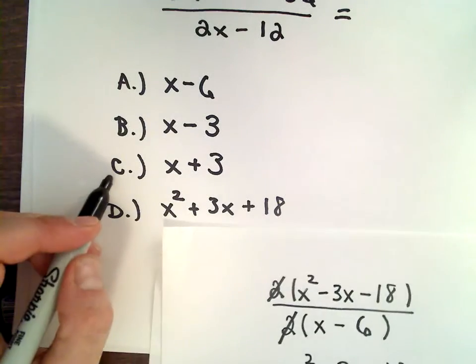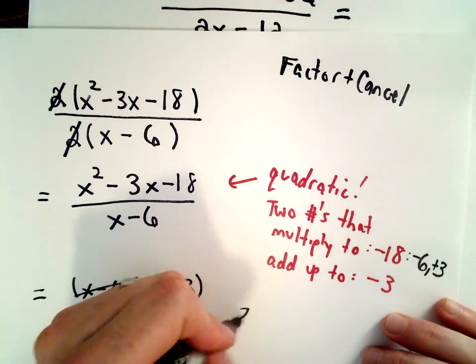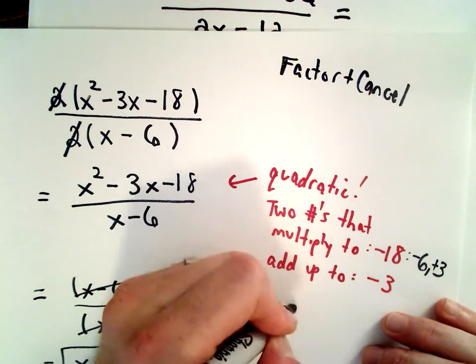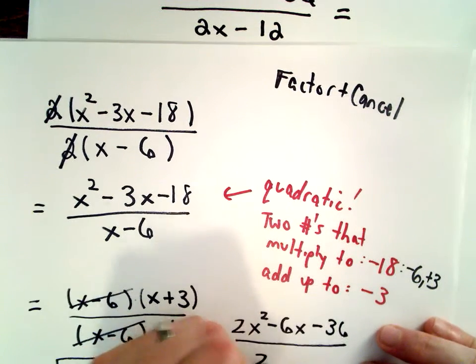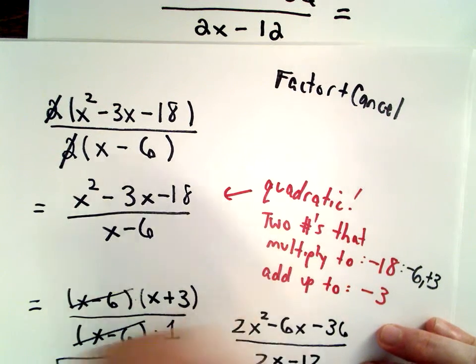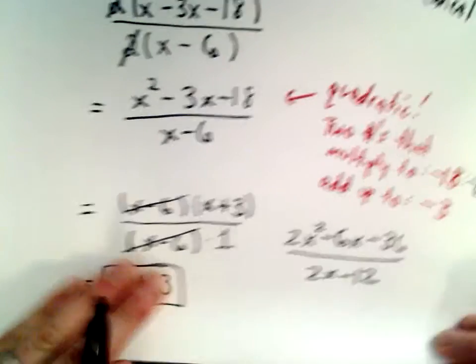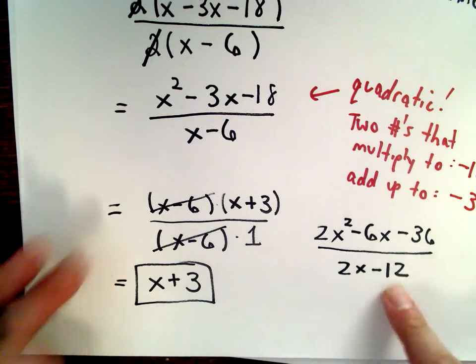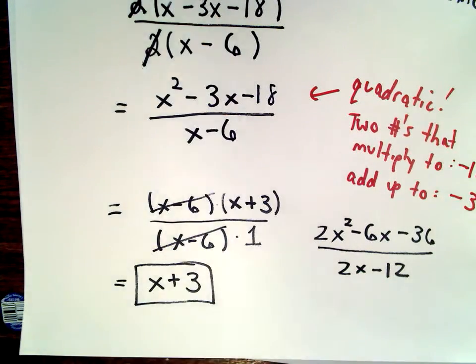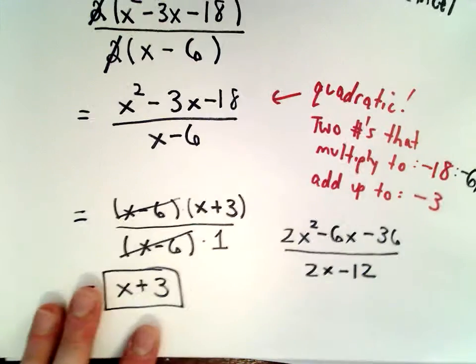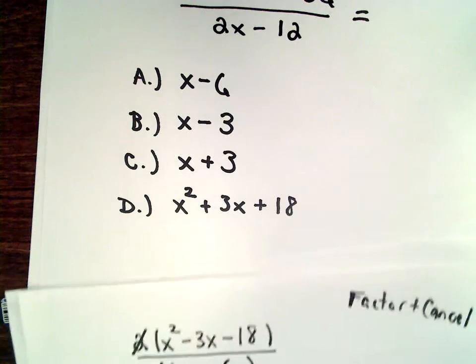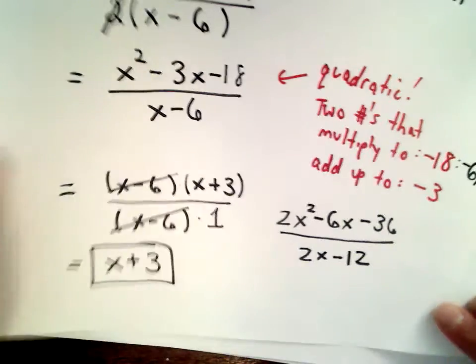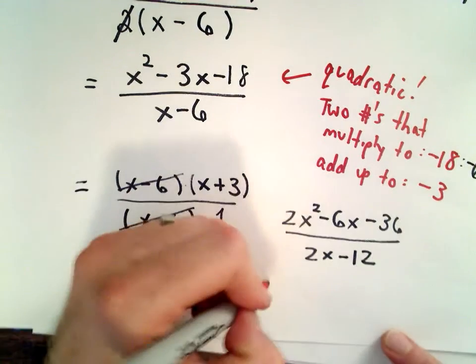Now again, the other thing you could do if you were just totally like, I have no idea how to do this, you could always substitute in a value for x. Now I said as a rule of thumb, don't use x equals 0 or x equals 1, but notice actually in this case, if we let x equals 0...